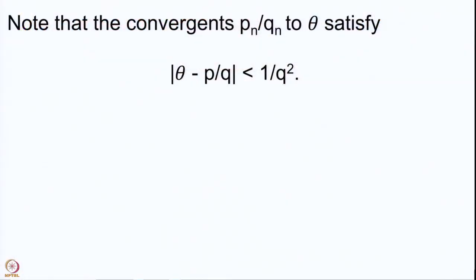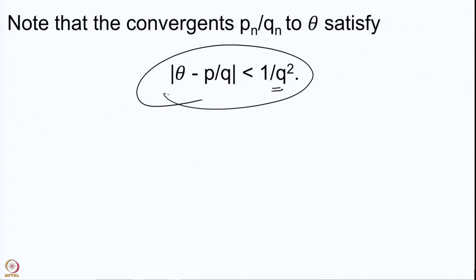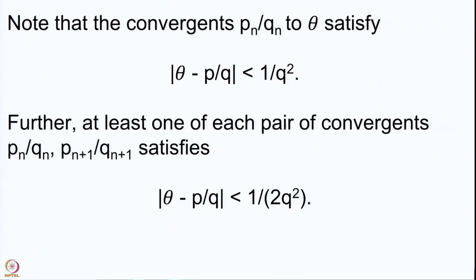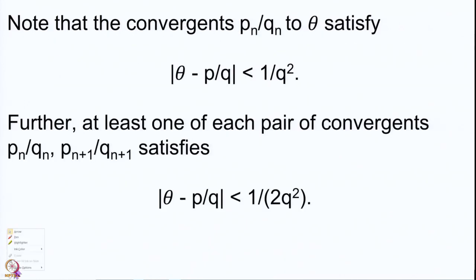Let us quickly go through the results proved in the last lecture. The convergents satisfy the inequality that |θ - P/Q| < 1/Q². This was clear from the construction of the continued fraction expansion. We improved this further: at least one from each pair of consecutive convergents satisfies |θ - P/Q| < 1/(2Q²). So the constant 1 has become 2.